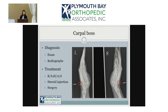Diagnosis is based on the exam as well as radiographs. On plain x-rays the AP and oblique views you really can't see it, but in the lateral view — shown here where the arrows and red circle are — you can see that bony prominence. Treatment is similar to almost everything in orthopedics: rest, ice or heat, anti-inflammatories either oral or topical.